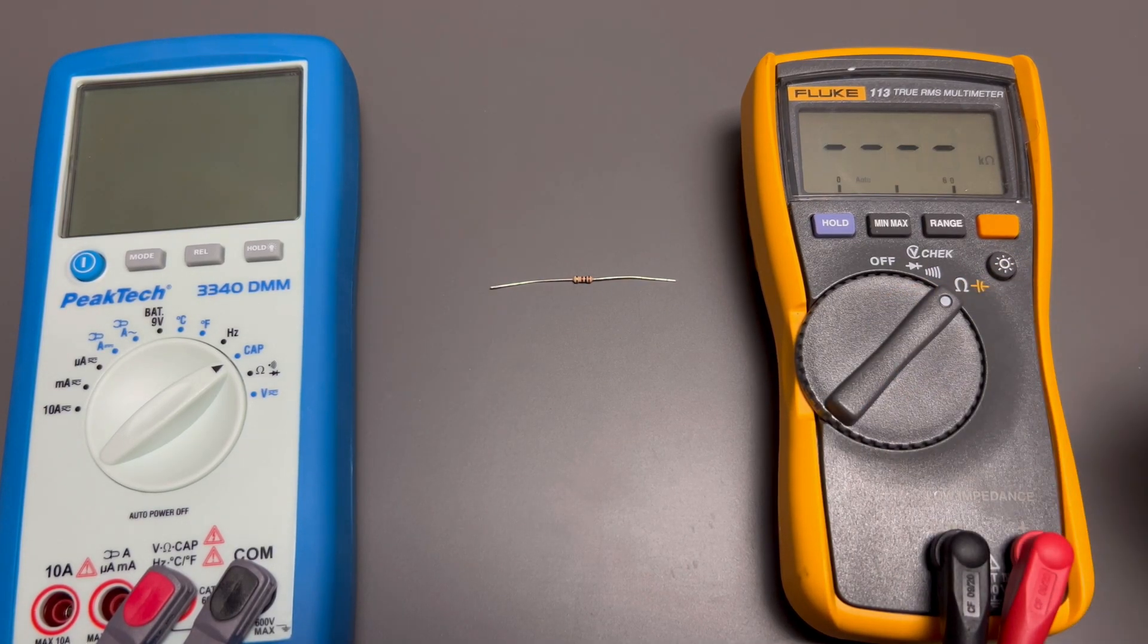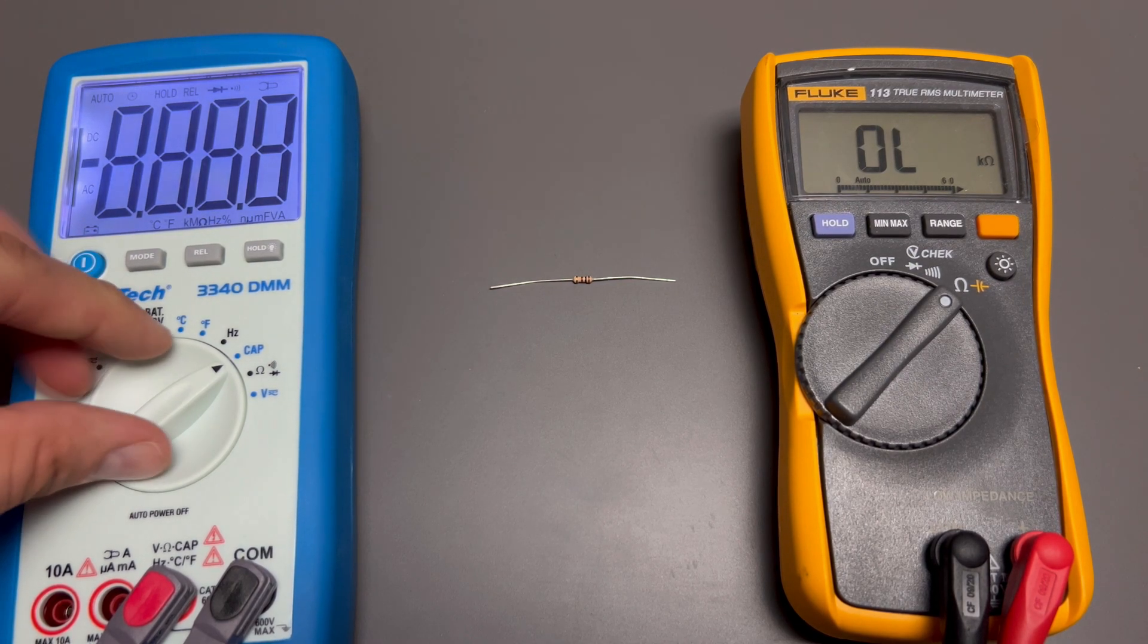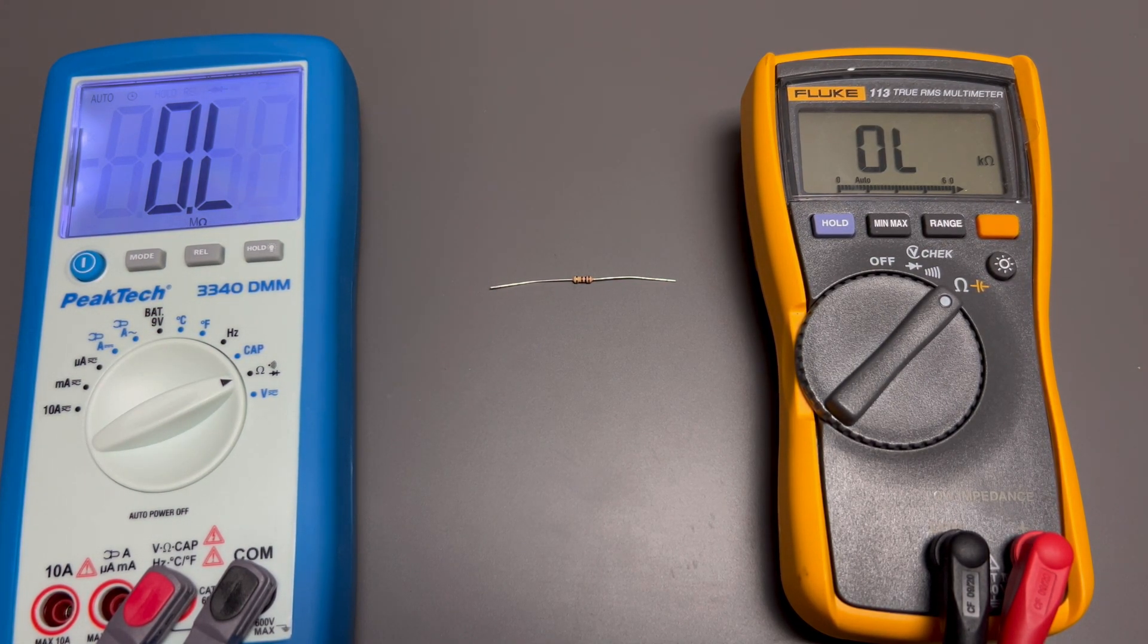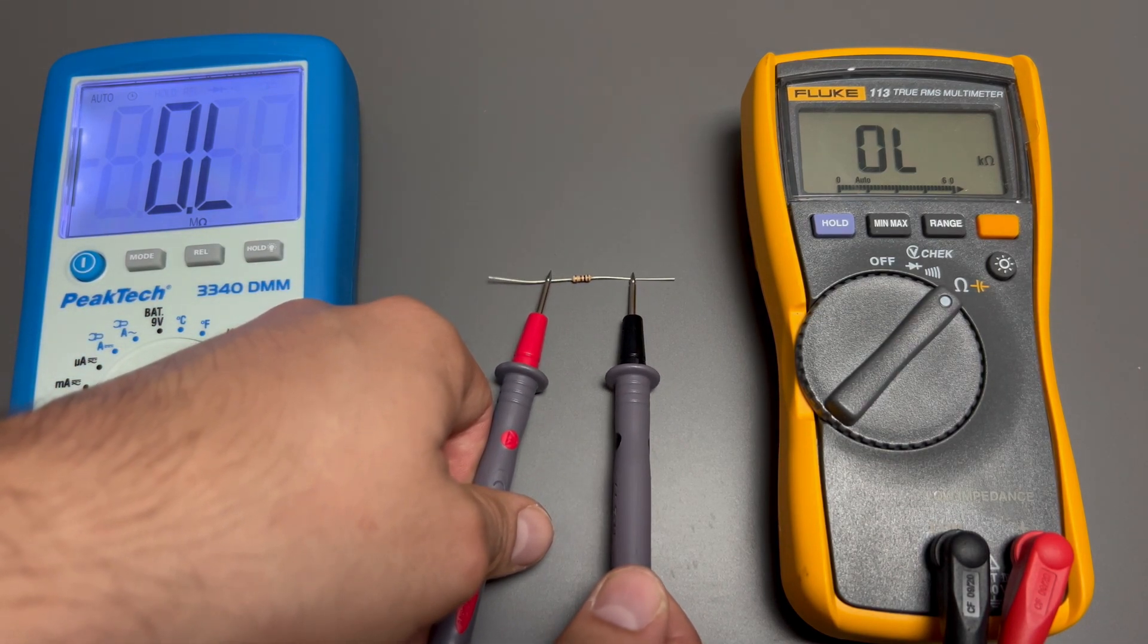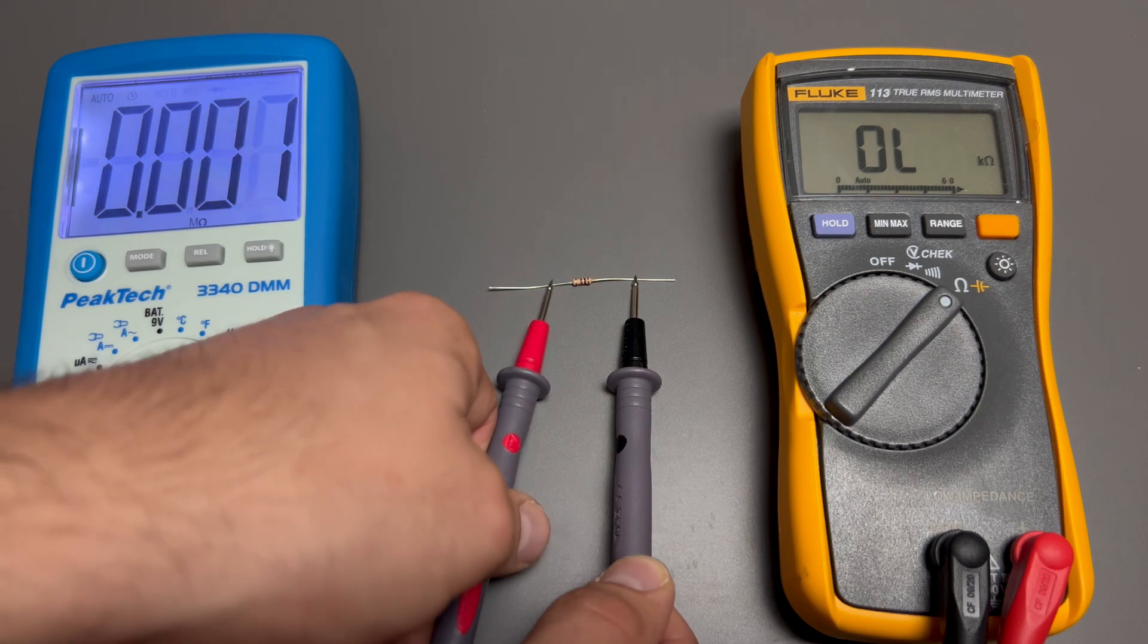Turn off power on the test circuit and discharge all capacitors before attempting in-circuit resistance measurements. If an external voltage is present across a component, it will be impossible to take an accurate measurement.